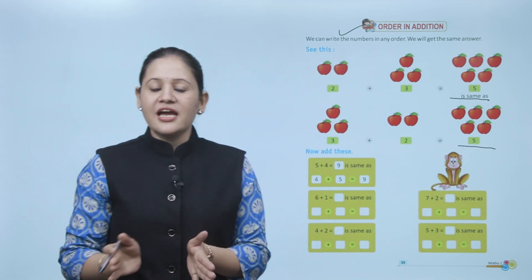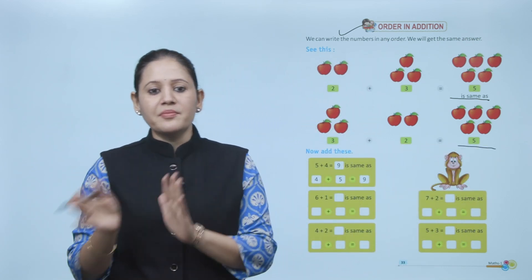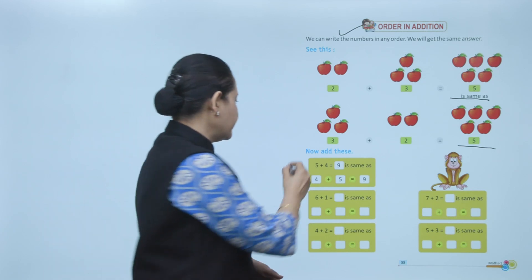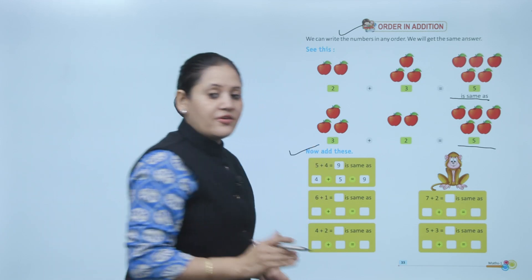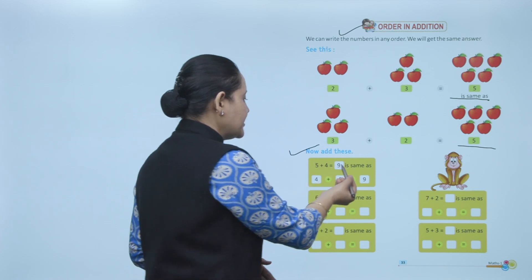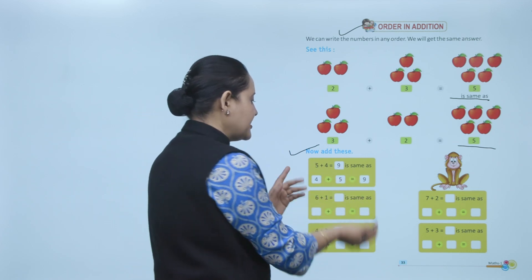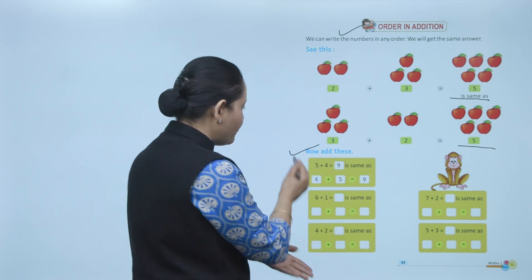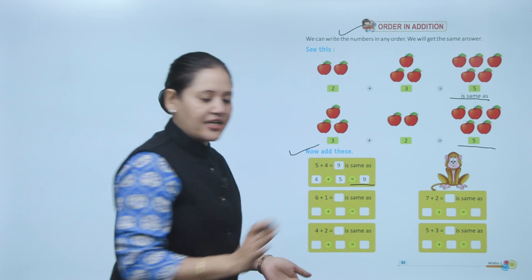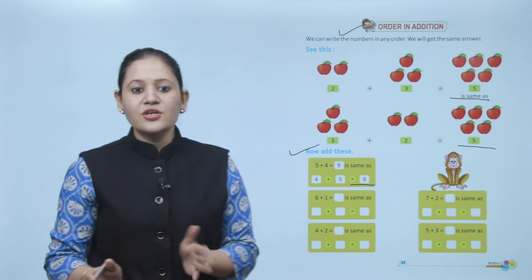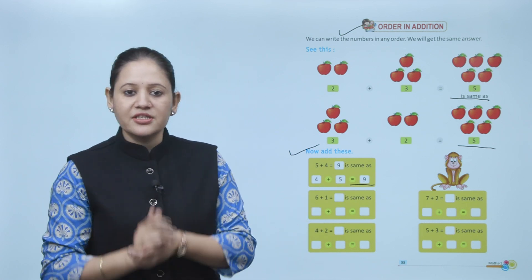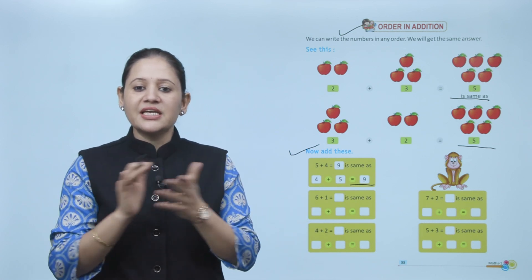We can add two or more numbers in any order. Five plus four equals nine, same as four plus five which is also nine. We can add numbers in any order — the sum will remain the same.